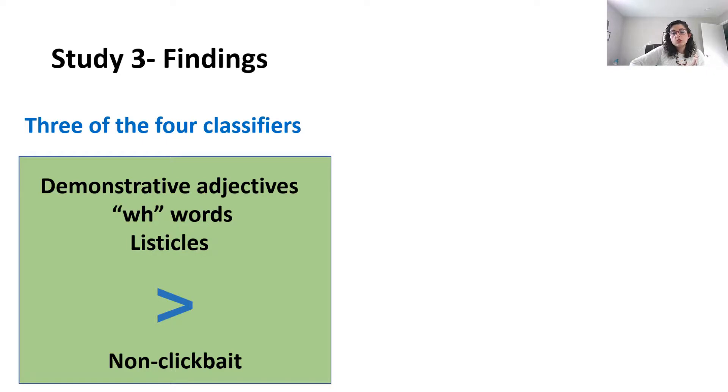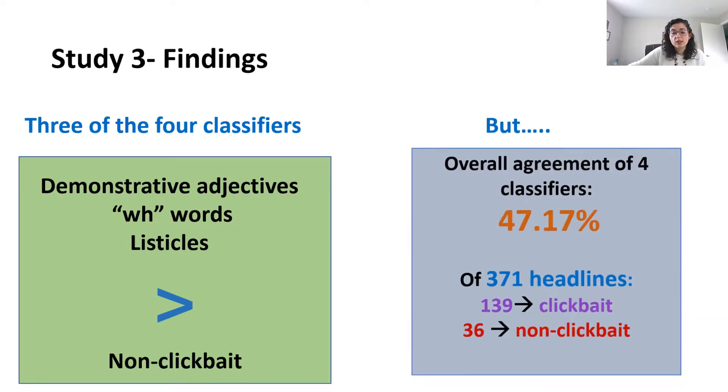But these findings should be taken with caution. The four classifiers agreed on the classification only 47% of the times. Of the 370 headlines, 139 were classified by the four as clickbait and 36 as non-clickbait.